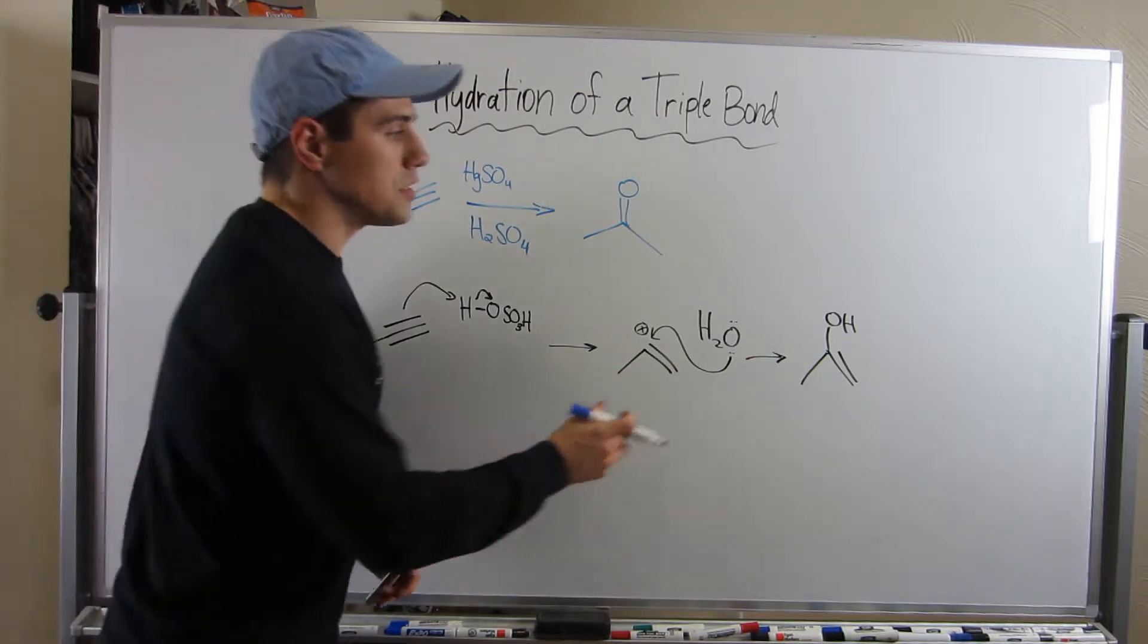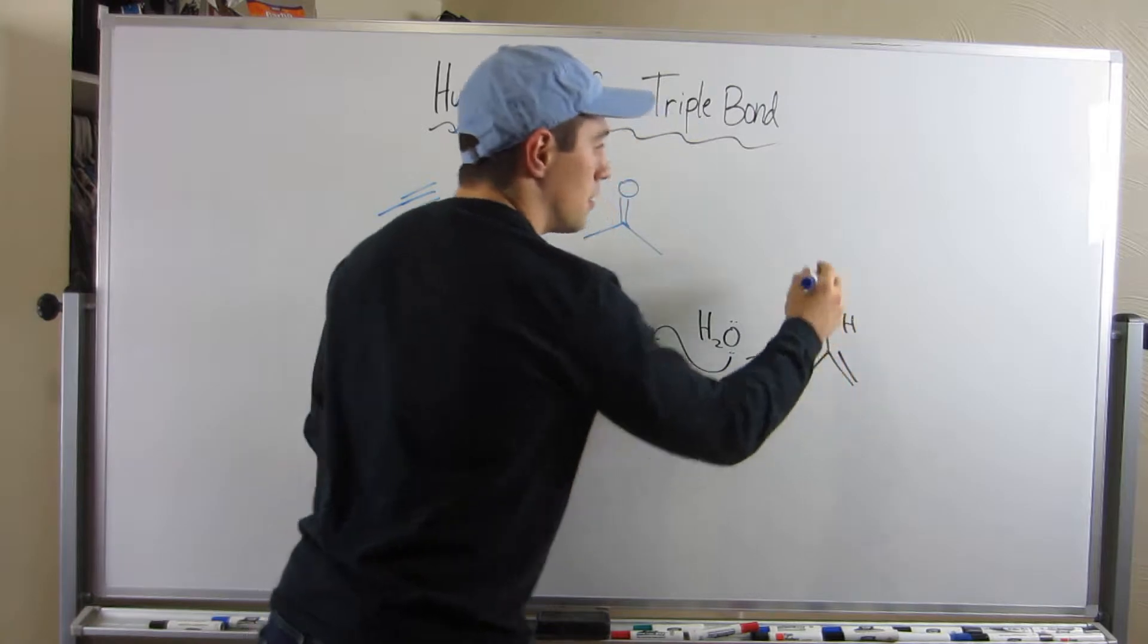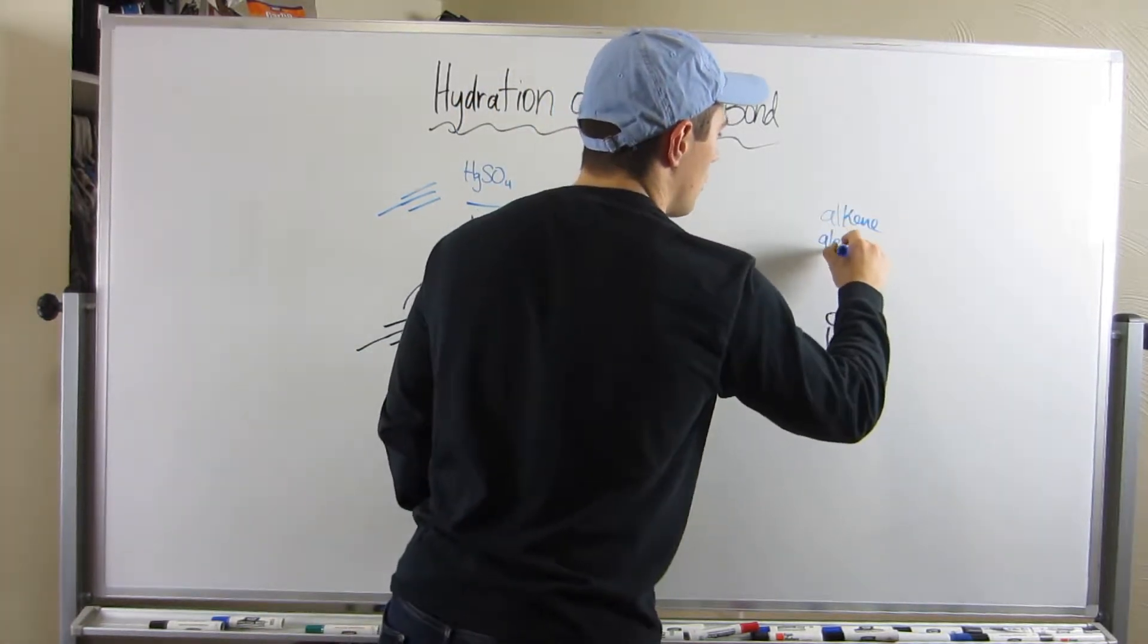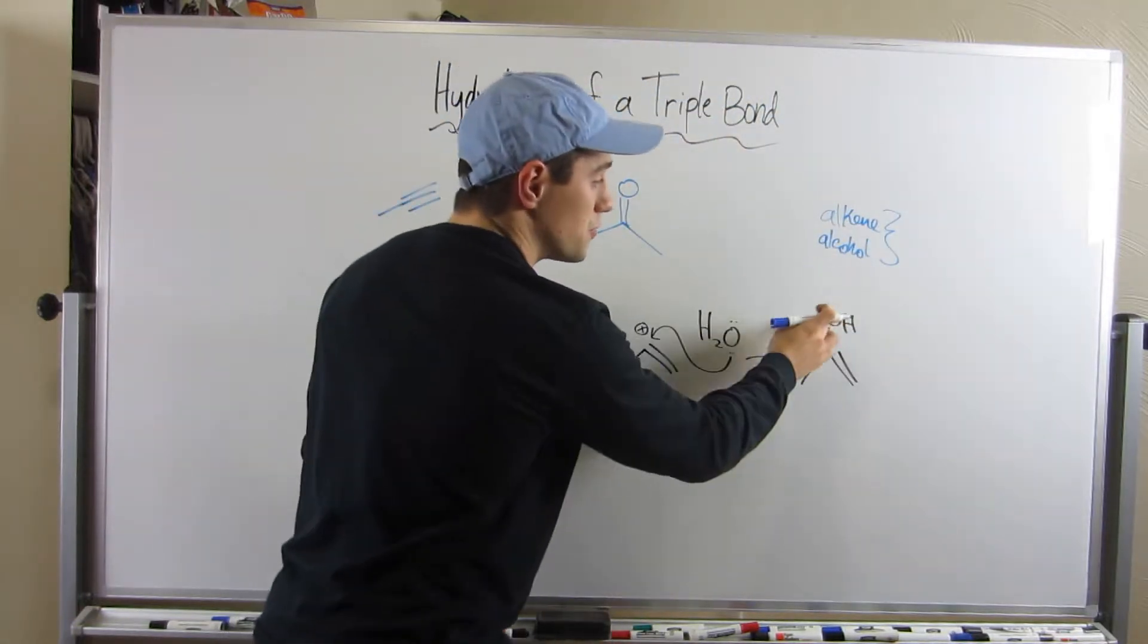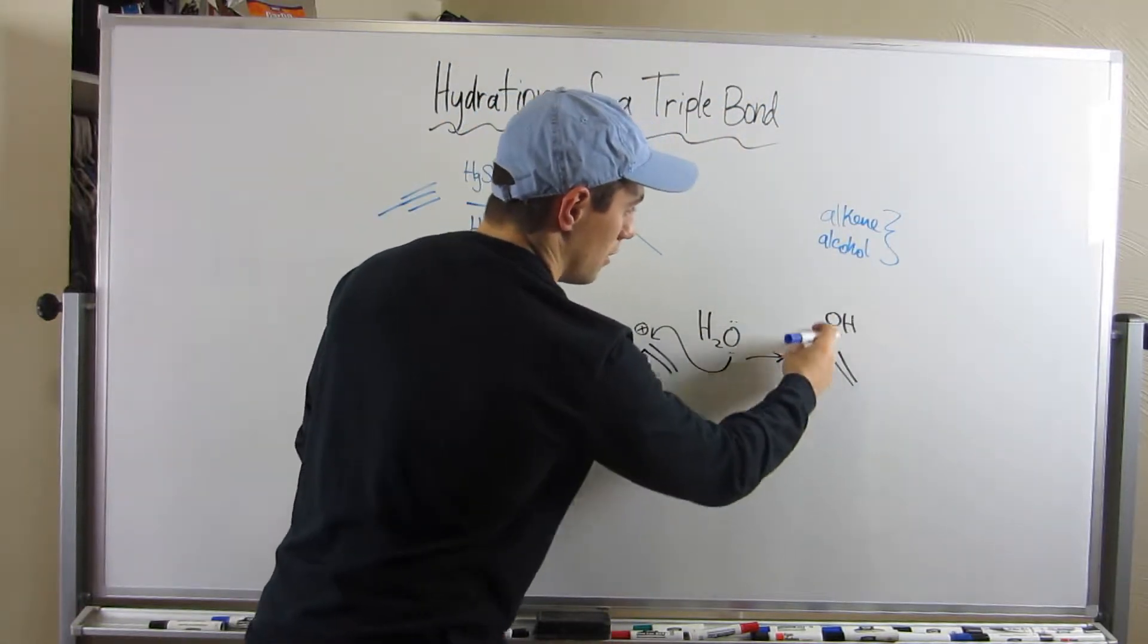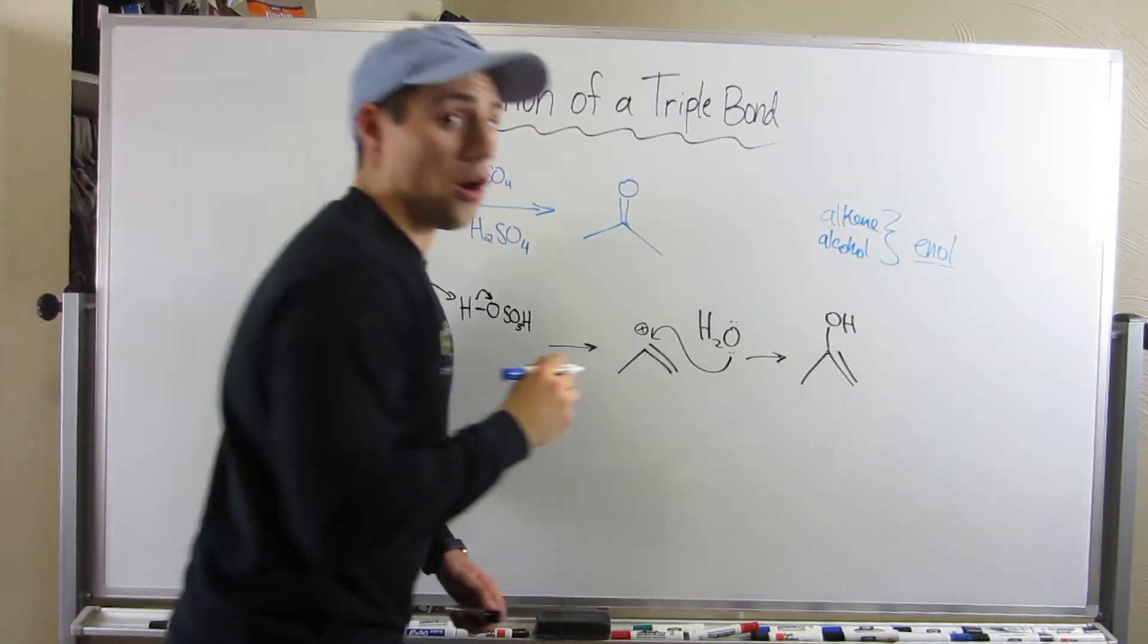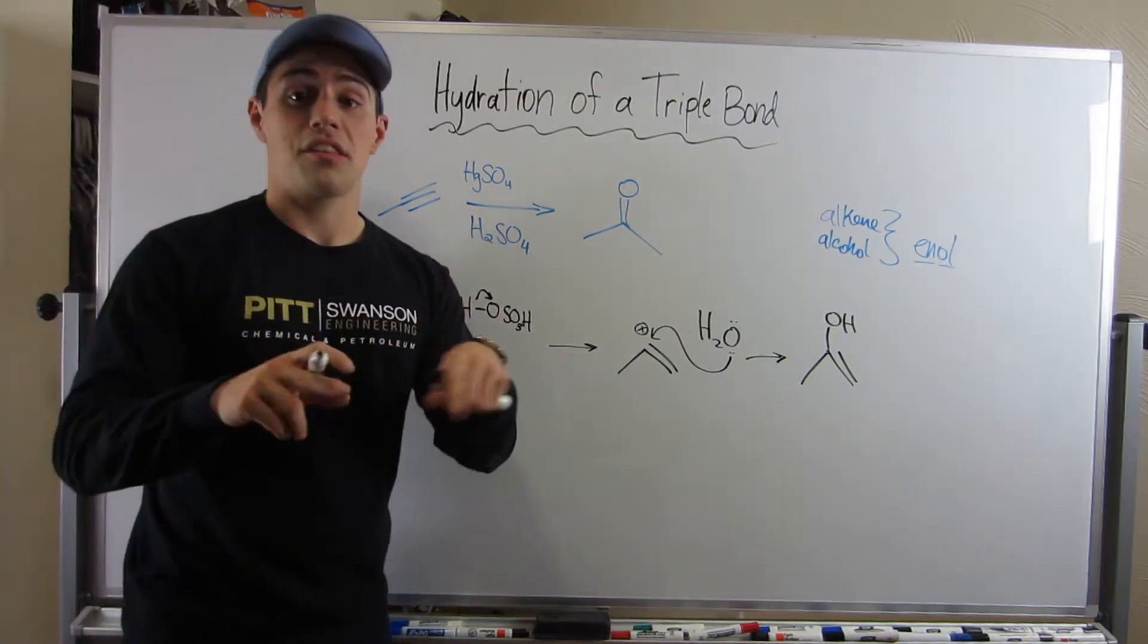Alkene, alcohol—people have combined these together to describe this functional group where you have this right here as an enol: alkene and alcohol. So the thing about enols, and I'll talk about this in the next video, they're not really stable. And in fact, whenever you have an enol, what happens is they